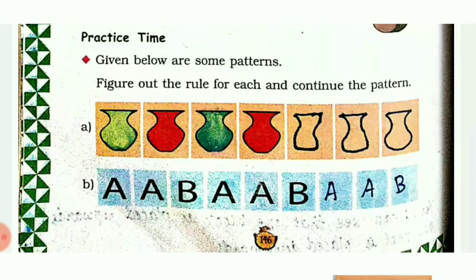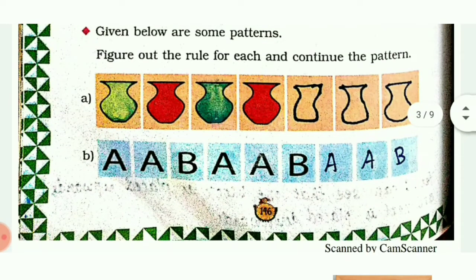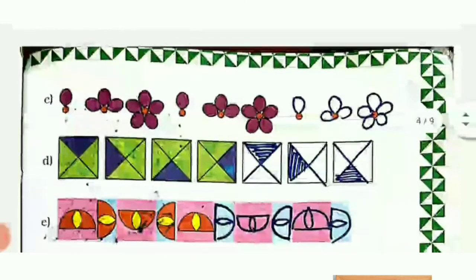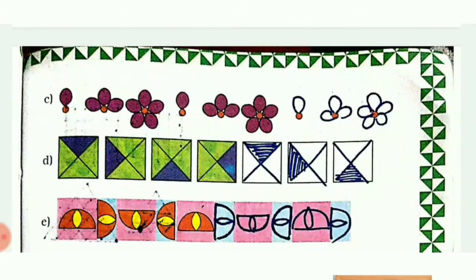The next one is an alphabetic pattern: A, A, B, A, A, B, A, A, B - this pattern keeps repeating. The next one is a design pattern - first there is a petal design with one petal with one dot, the second has three petals, the third has five petals. So the pattern is one, three, five.